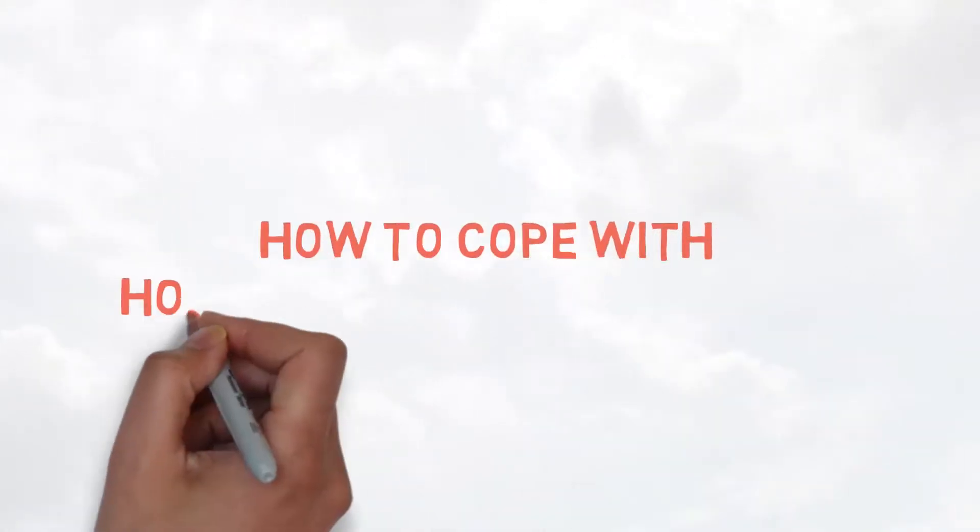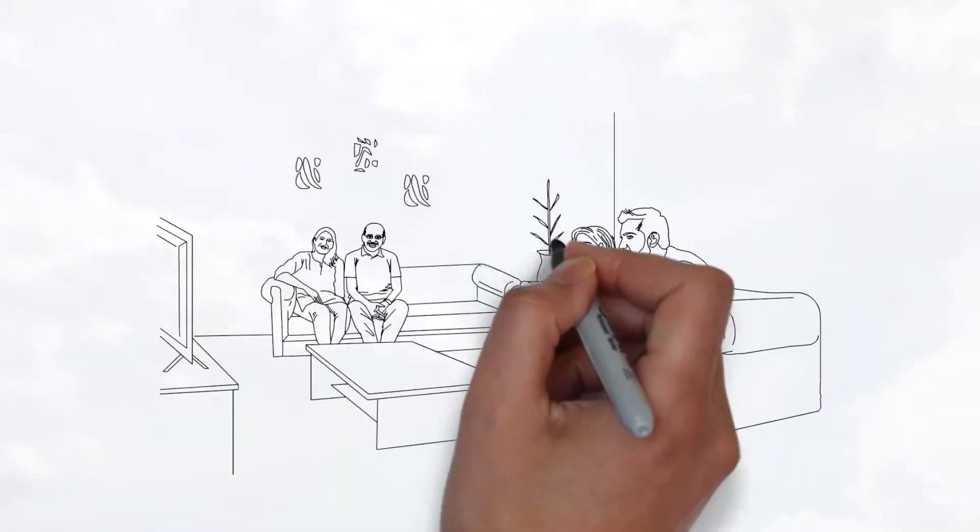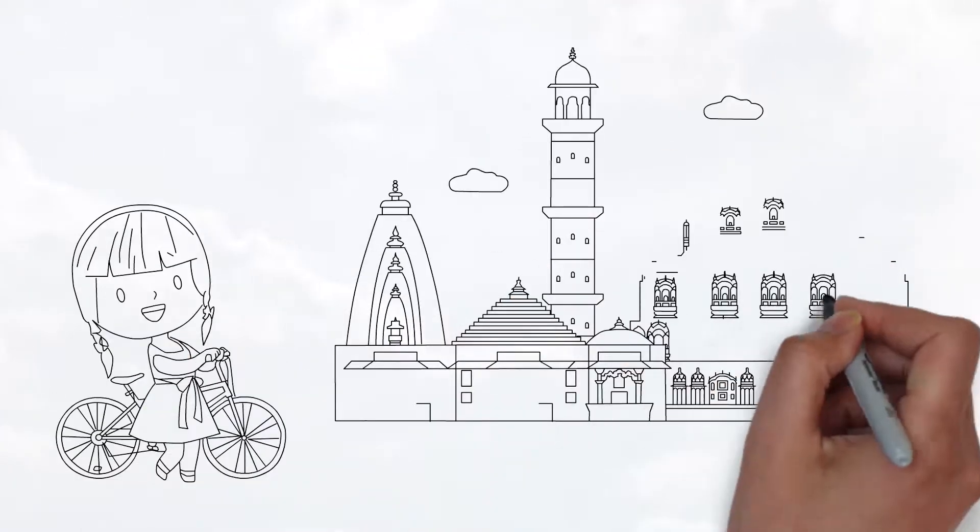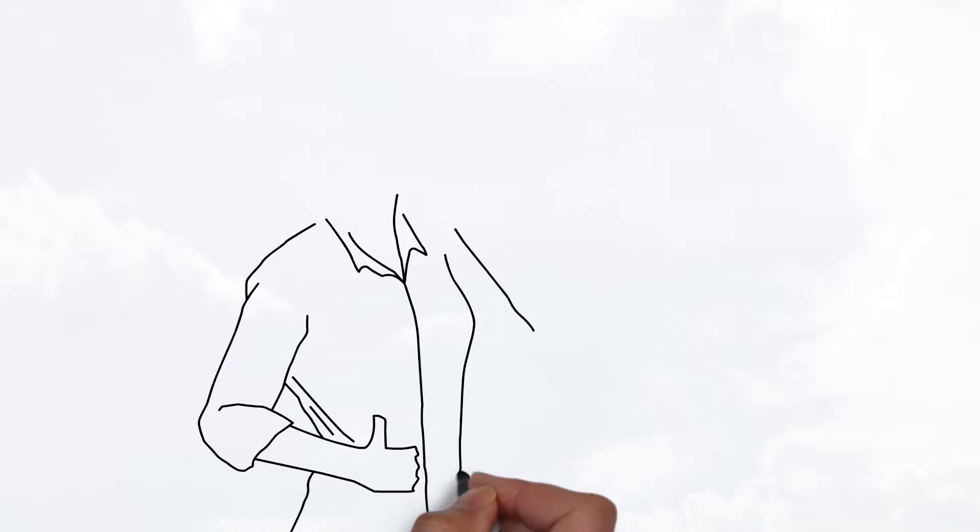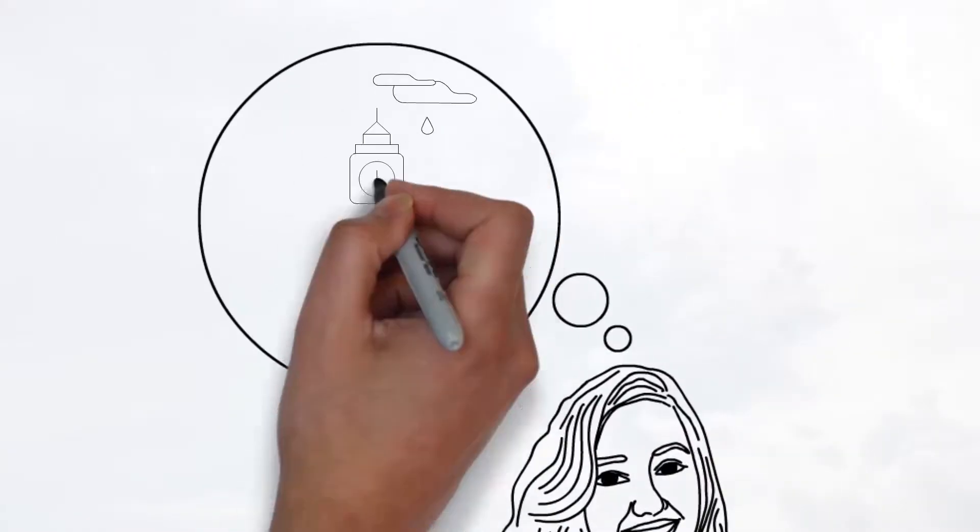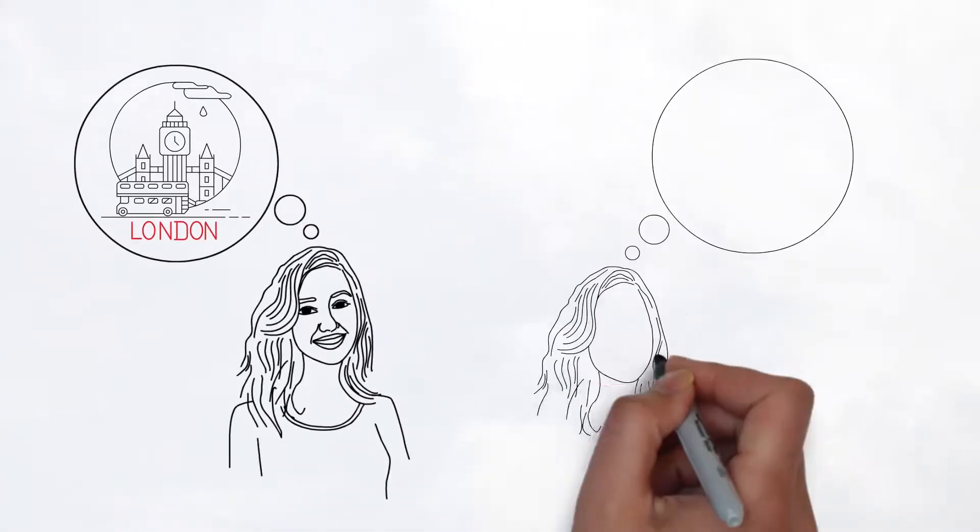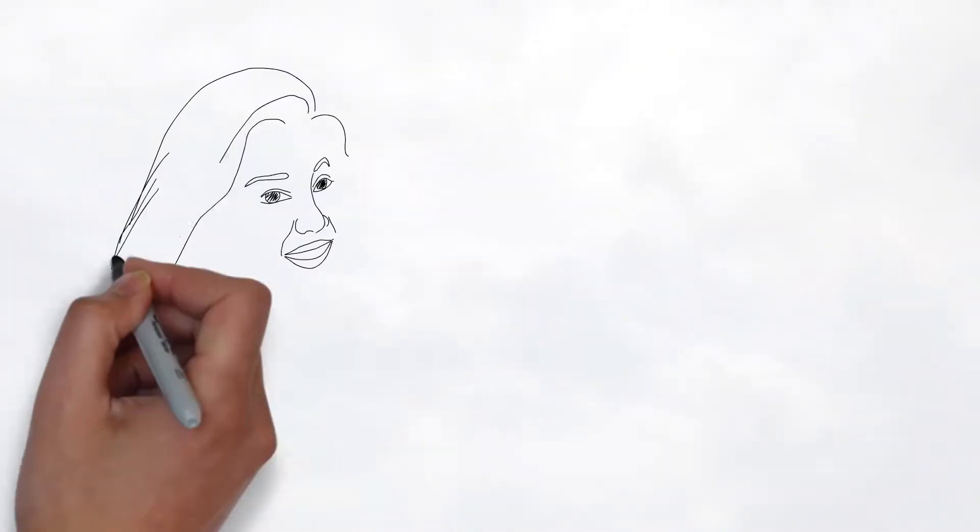University Living presents How to cope with homesickness at university. Meet Geet, the youngest in a family of four. Geet spent all her childhood in the pink city of Jaipur. When she won a scholarship to London she was both excited and nervous. Excited to start a new life but nervous to leave behind everything that feels like home.